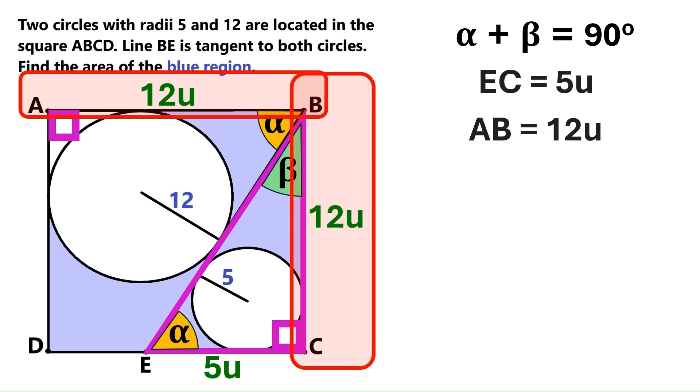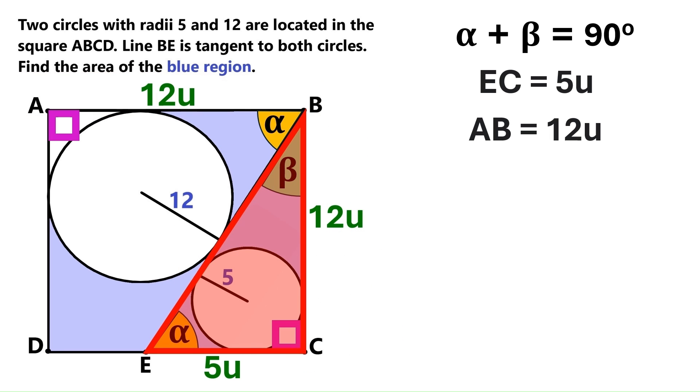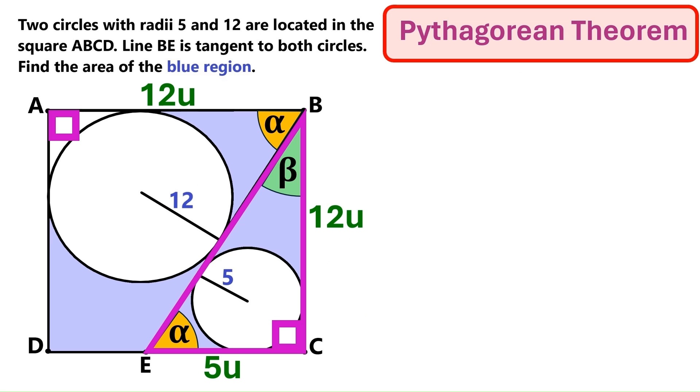And this AB and this BC are both sides of the big square. So BC must also be 12U. Now let's go back to this right triangle, and apply the Pythagorean theorem, which states that the sum of the squares of the shorter sides of a right triangle equals the square of its longer side.